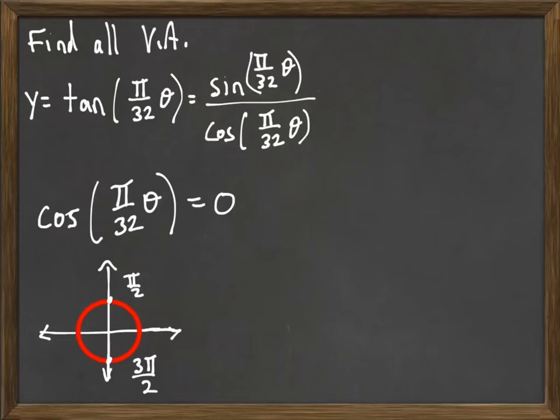Or any angle that's coterminal with those. You can say π over 2 plus any multiple of 2π, or 3π over 2 plus any multiple of 2π. Or realize that these two are a half turn away from each other. So we can actually get by with π over 2 plus any multiple of π. Even multiples would be a full turn, odd multiples would involve a half turn.